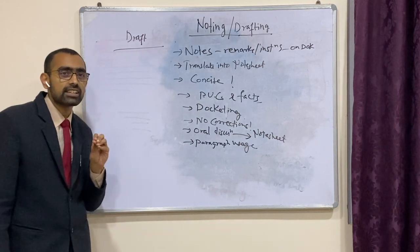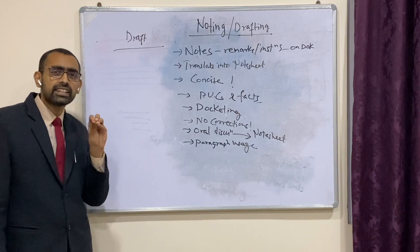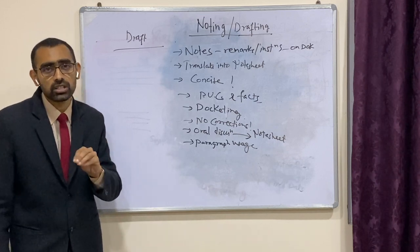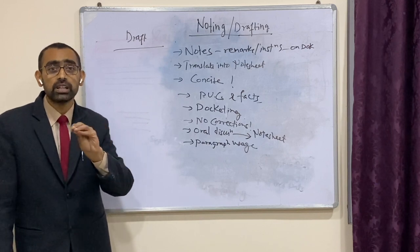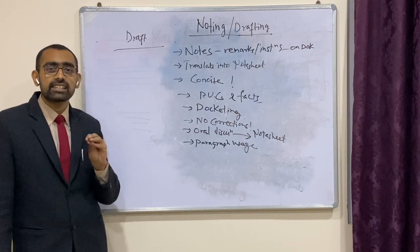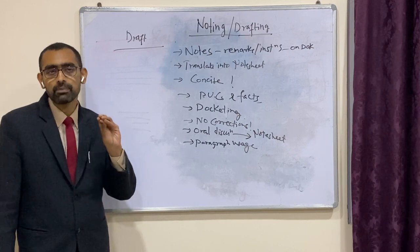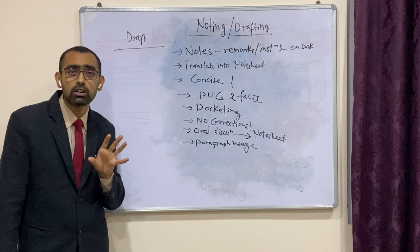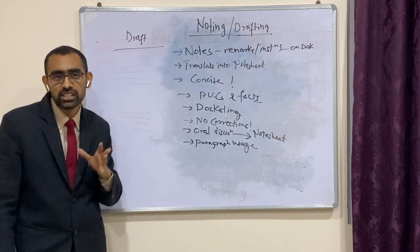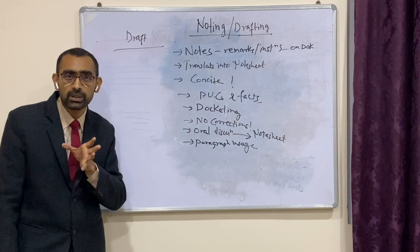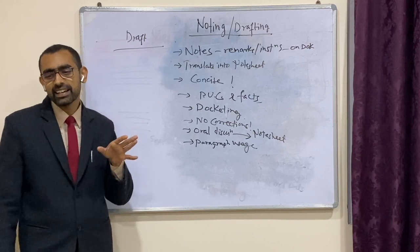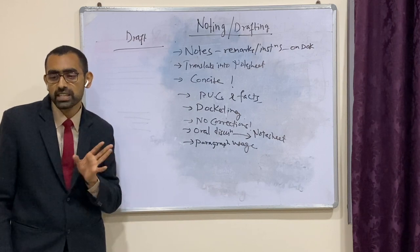Another thing while making a draft: use of names is only to be done in certain types of letters. Usually in letters and communication, it has to refer to the particular post — for example, you are writing to the Executive Engineer, PWD Buildings. There is no requirement to mention the name of that person, unless it is a classified communication meant only for him, or a demi-official letter. Generally, in all normal letters, name usage has to be avoided.